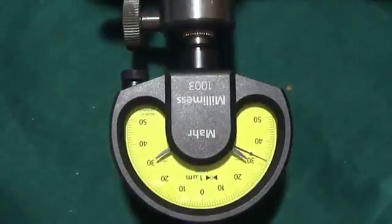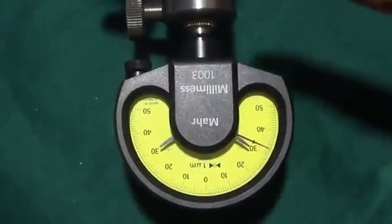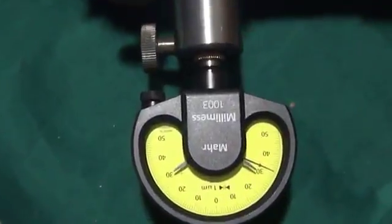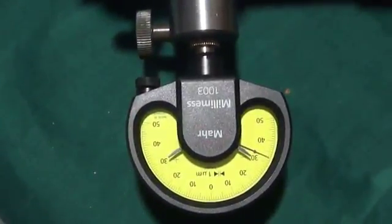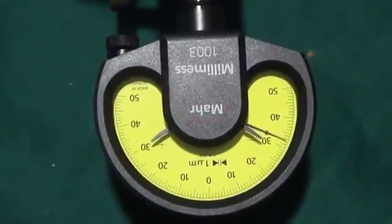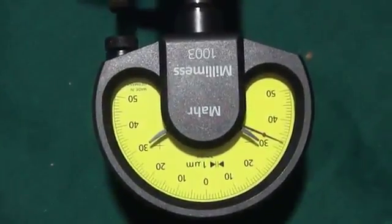Insert the dial indicator in adapter and lock the dial indicator in adapter. Now, I will explain the procedure to measure outside diameter of bearing rings by this instrument.